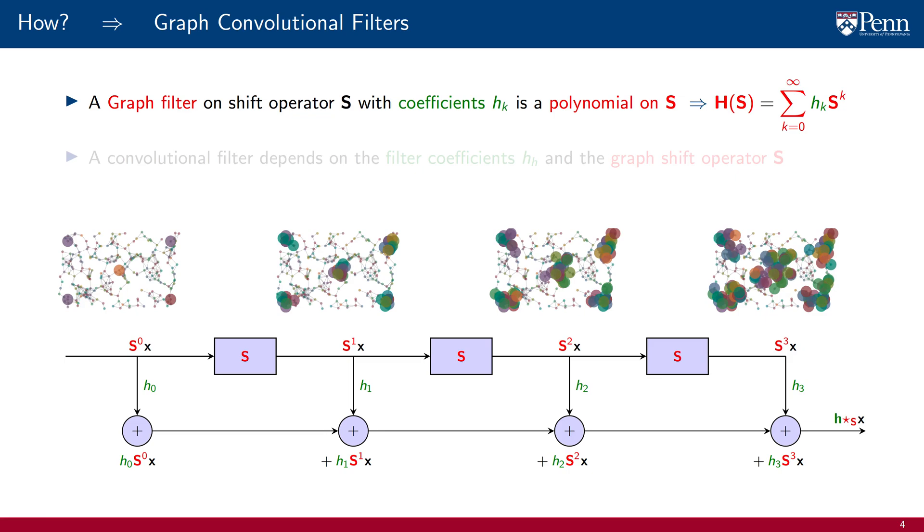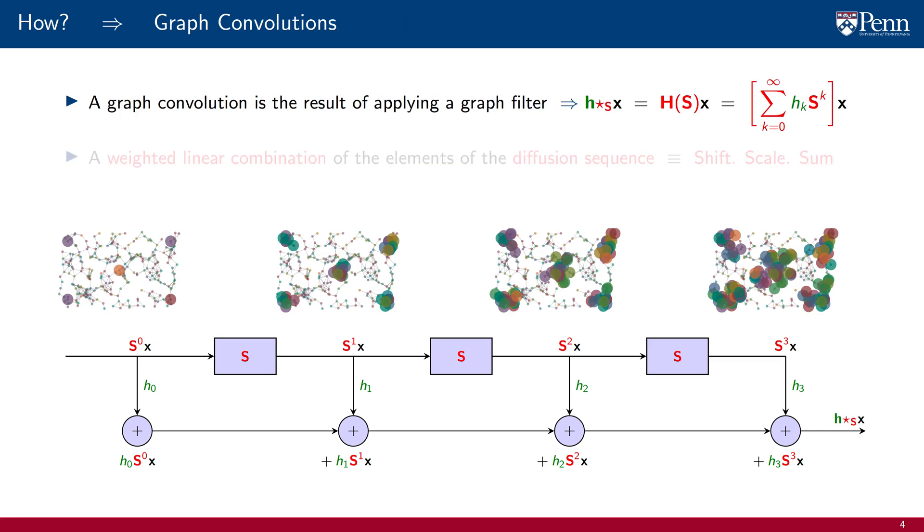The second component of our answer to the question of how is to design graph convolutional filters, which we defined as polynomials on the shift operator S that utilize coefficients HK. The convolutional filter depends on the filter coefficients HK and on the shift operator S. The effect of these two parameters is somewhat separate, a fact we have exploited for transference and that is also crucial for analysis. A related notion is that of a graph convolution, which is the result of applying a graph filter to a graph signal. This is just a matrix vector multiplication, but it is also a weighted linear combination of elements of the diffusion sequence. We never compute graph filters. We compute graph convolutions because they are computationally more efficient.